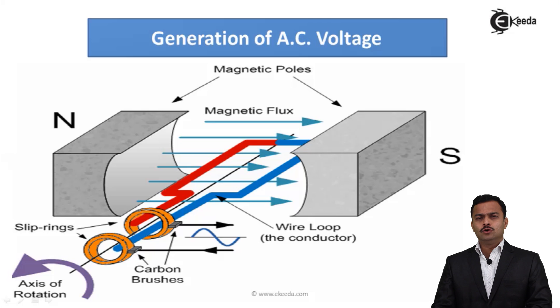Then we consider one loop made up of two conductors. I have shown two colors. Red one is conductor number one, this blue is conductor number two. And we have connected brushes in order to take whatever voltage gets generated out of it. The axis of rotation is anticlockwise for the coil.